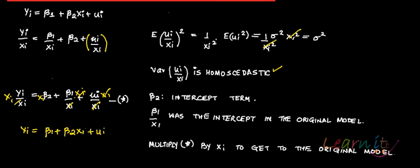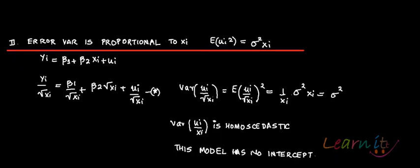Here is one more example. Suppose the error term variance is proportional to xi, not xi squared. In this case, you have the original model and the error variance ui squared equals sigma squared xi.